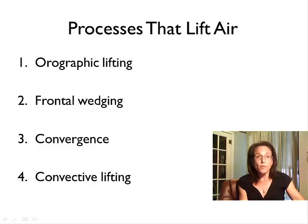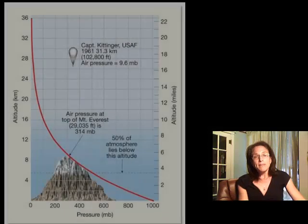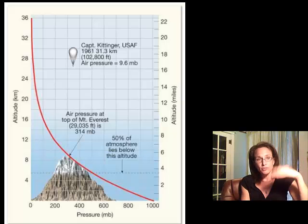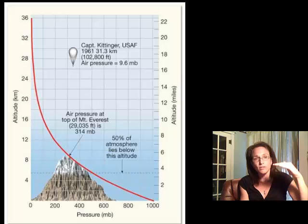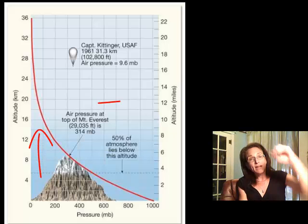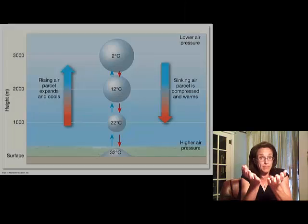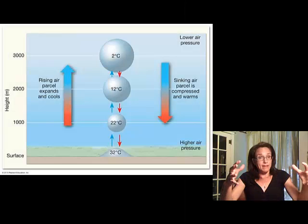So these are four processes that lift air in the atmosphere. And now what we need to understand is what happens when that air lifts. Now we talked about how air pressure changes with elevation, with altitude. As we move up in elevation, air pressure decreases. So that means as air moves up in elevation, it's going to expand.